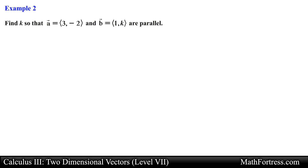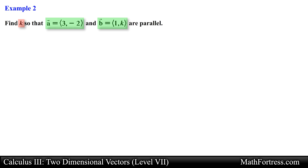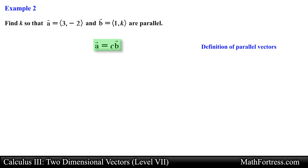Let's try the next example. Find K so that vector A and vector B are parallel. Here we are given two vectors and we are asked to find the value of K that will make both of these vectors parallel to one another. Notice that K represents the y component of vector B. We need to somehow set up a relation between both of these vectors that would be true if both vectors were indeed parallel to one another.